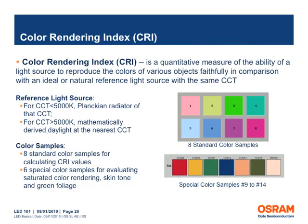The color rendering index, or CRI, is a measure of a light source's lighting quality. It is an index rating commonly used to represent how well a light source renders the colors of objects that it illuminates. For a CRI value of 100, the maximum value, the colors of objects can be expected to be seen as they would appear under an incandescent or daylight spectrum of the same correlated color temperature. Eight standard color samples are used for calculating CRI values. Six additional color samples are used for evaluating rendering of saturated colors, skin tone and green foliage.